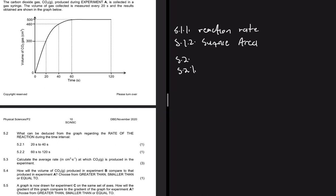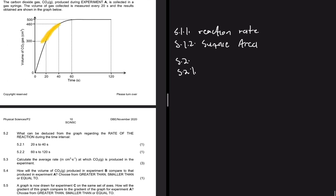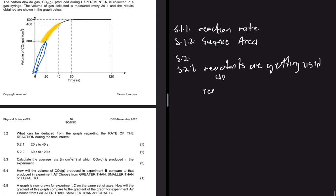For 5.2.1, looking at the time interval 20 to 40 seconds, the graph starts flattening out — it's not as steep as from 0 to 20 seconds. We can see that reactants are getting used up, and as a consequence the reaction rate is decreasing.